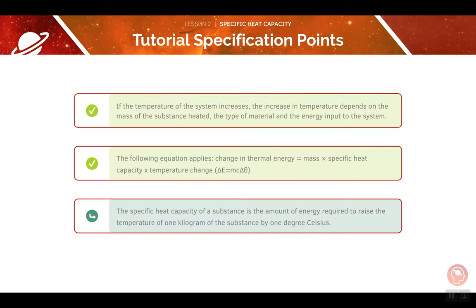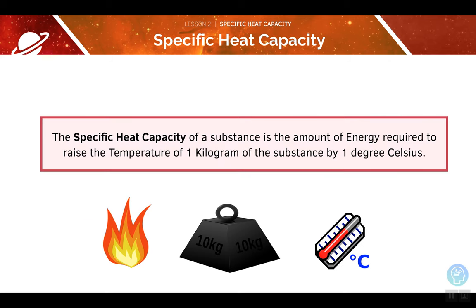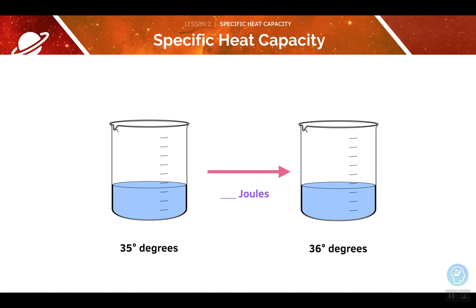The final learning objective is to look at the specific heat capacity of a substance. We previously covered this in section 4.1, energy. For completeness, we're going to recap the definition here. Specific heat capacity is the amount of energy required to raise the temperature of 1 kilogram of a substance by 1 degree Celsius. Pause the video now to work out how much energy this process requires. The answer, because the substance is water, is 4,200 joules.